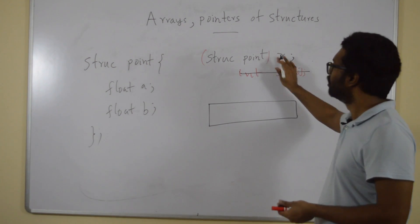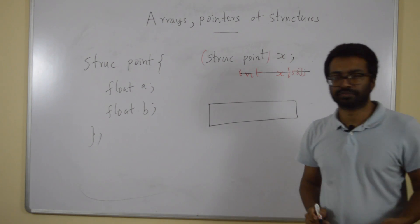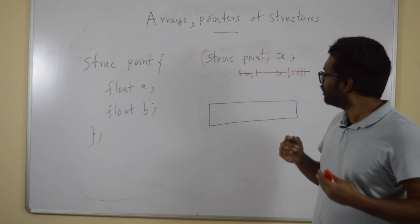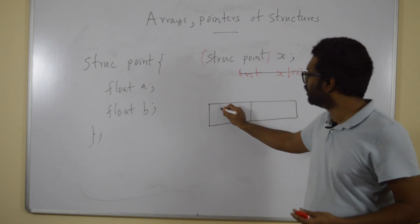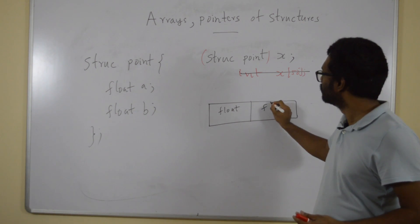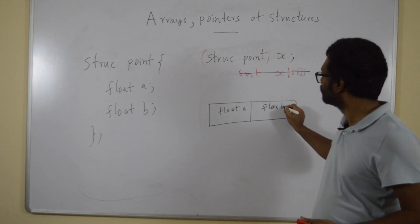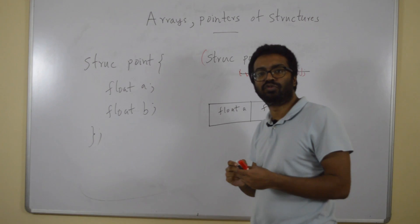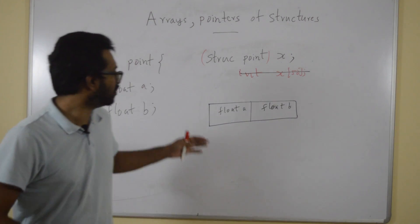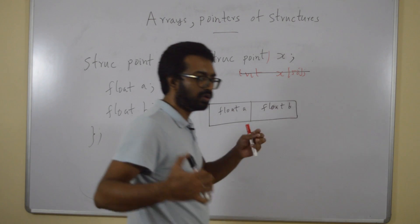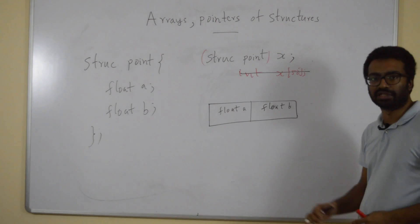I just have struct point float x. For that, the machine will allocate basically two float values. So memory for two float values, which we know are called a and b. So this will be 4 bytes, 4 bytes, totally 8 bytes will be allocated for this structure.